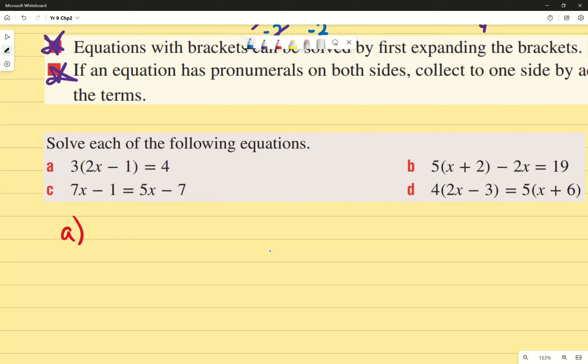So it's 3 times 2x which is 6x. Then I have 3 times negative 1, not forgetting the negative, which gives me minus 3. Equals to 4. And then it's the exact same thing as before. Obviously the minus 3 is annoying so I'm going to plus 3 on both sides.